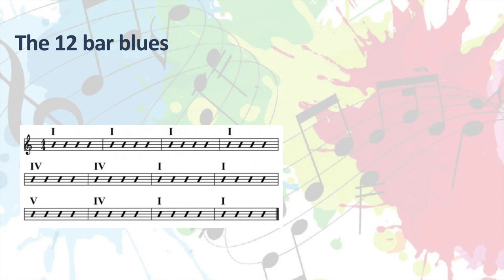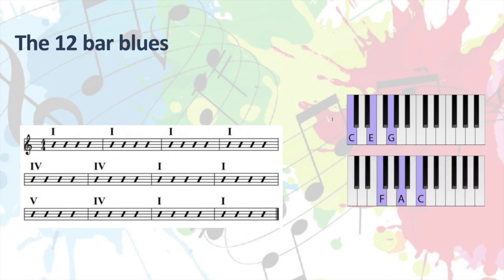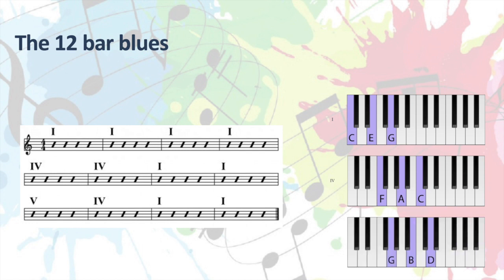So what is the 12-bar blues? We've got our chords — C, E and G. So you can see on our music it's got I, which means it's the C chord, so we know which one to play. IV is the F chord. We've got one chord of G on the bottom line where it says V, and that is chord G — G, B and D.